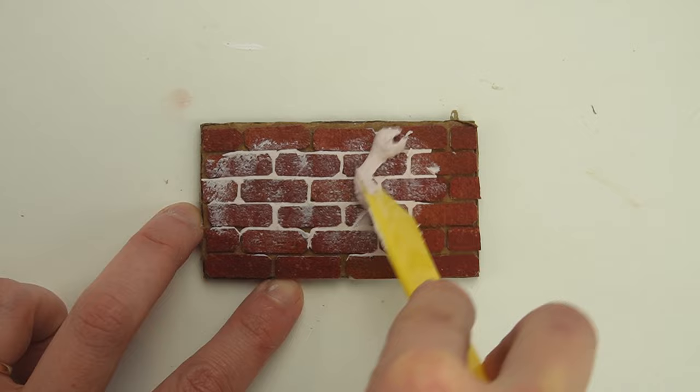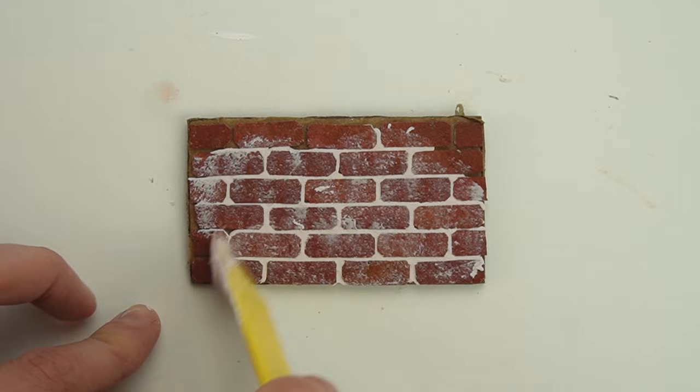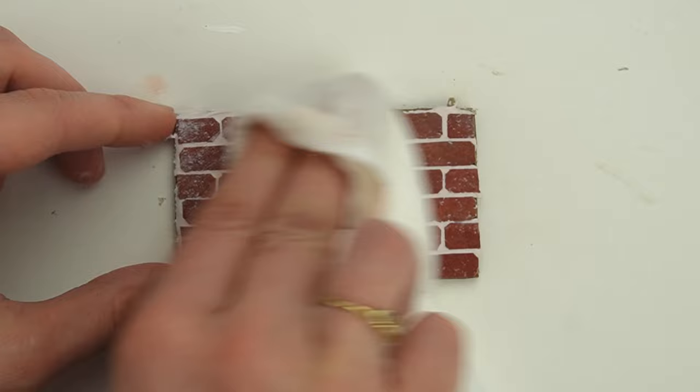I'm making white grout lines, but you can add some paint to the spackle to give it color. Since I sealed my bricks, I can use a damp paper towel to remove most of the spackle from the surface of the bricks. If you don't seal the bricks, the spackle will leave a white haze, which might be the look you're going for, so try both methods and see what you like.